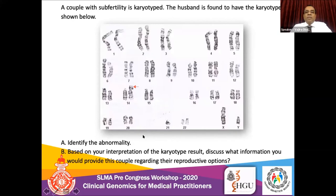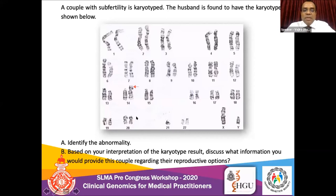Moving to another case: a couple with subfertility is karyotyped and the husband is found to have a specific karyotype. As shown by the arrow, one chromosome 21 is missing and has been translocated onto chromosome 14. This is a balanced translocation carrier father who came to light because of a previous child who would have had an unbalanced translocation — they would have had this chromosome 14 with the translocated chromosome from the father and another chromosome 21 from the mother, making them trisomy 21. This kind of diagnosis results in karyotyping of the parents, and in some instances we detect a balanced translocation carrier.